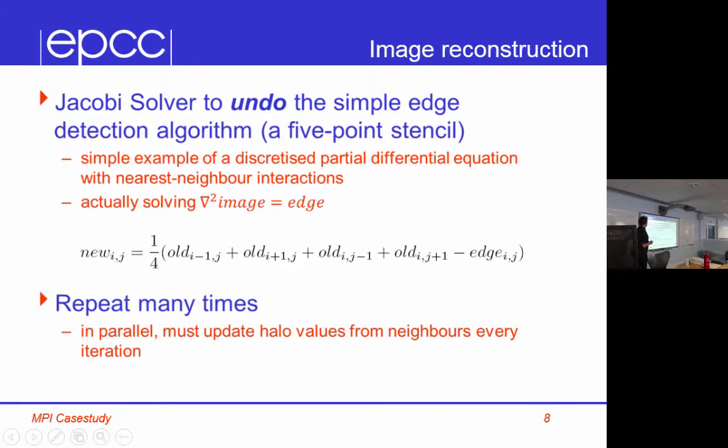So we want to solve grad squared image equals edge given edge, and it turns out that's a well-posed problem. So how do we do it? Well, it turns out that all you do is you start off with the edges, which I've given you. You start off with an old image, which you can guess anything you want. You can just take your initial guess as zero. And many, many times you say the new pixel is a quarter of the old pixels left, right, down, up, minus the edge. And then you just keep going round and round and round. It's a very simple algorithm, but it turns out that it does actually get you back the right answer.